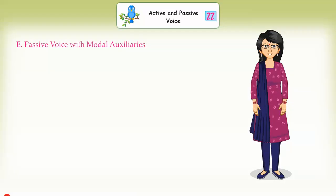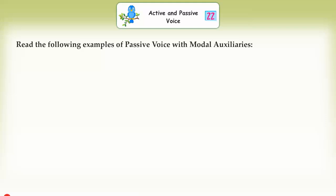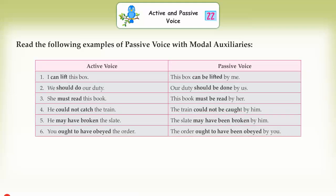Passive voice with modal auxiliaries. Active: 'I can lift this box.' Passive: 'This box can be lifted by me.' Active: 'We should do our duty.' Passive: 'Our duty should be done by us.' Active: 'She must read this book.' Passive: 'This book must be read by her.' Active: 'He could not catch the train.' Passive: 'The train could not be caught by him.' Active: 'He may have broken the slate.' Passive: 'The slate may have been broken by him.' Active: 'You ought to have obeyed the order.' Passive: 'The order ought to have been obeyed by you.'